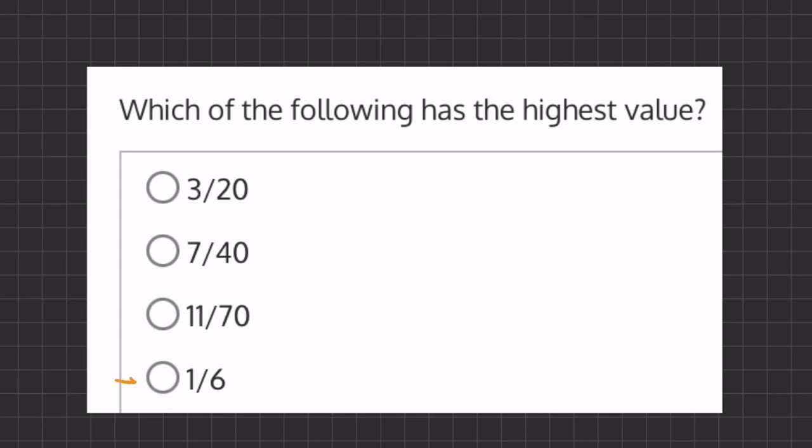So our easiest anchor will be one-sixth. If we ever have a fraction that has a one in the numerator, that will most likely be our easiest anchor to use.